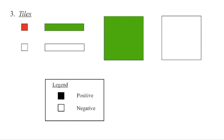Algebra tiles are named based on their area. This little square here has a base of 1 and a height of 1, so its area is 1 times 1, which is 1. There is often a legend which indicates which tiles are positive and which are negative. The textbook uses colored tiles as positive, so this would be positive 1 and this would be a negative 1 tile. The shading determines the sign and the shape determines which tile we have.